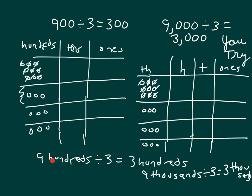As you see, these two expressions are very similar. We go 9 divided by 3, and the hundreds there stay the same, just as the thousands stay the same. When we divide thousands there, we still have thousands.